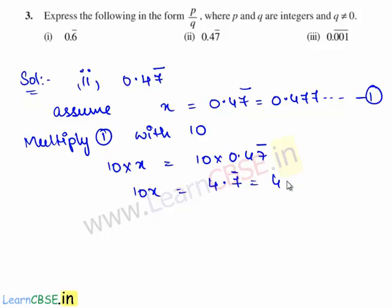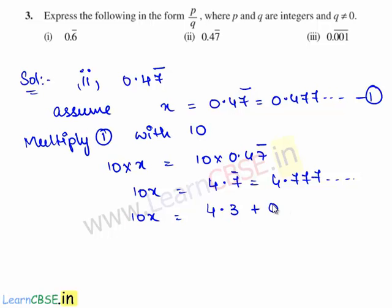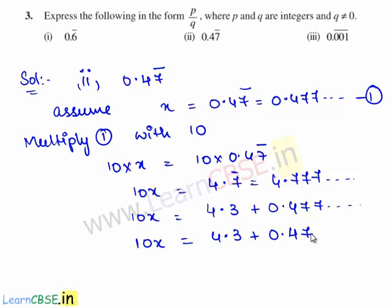This gives 10x is equal to 4.7 bar, which is 4.777 and so on. Here 4.777 and so on can also be written as 4.3 plus 0.477 and so on. So this is 10x is equal to 4.3 plus 0.47 bar.